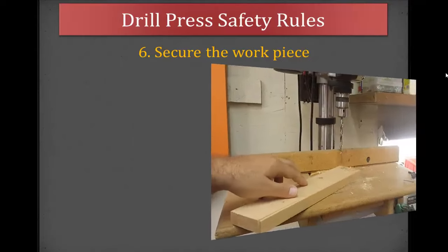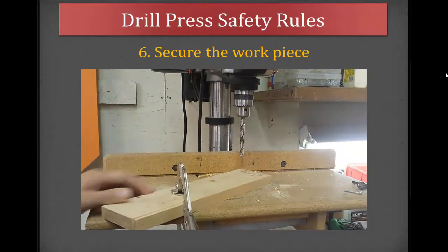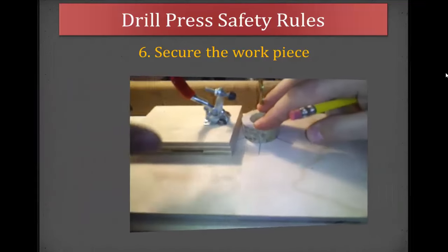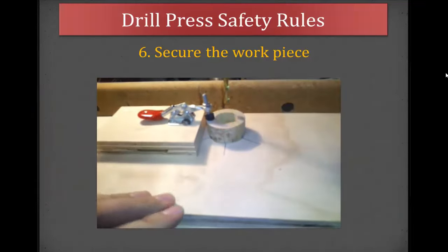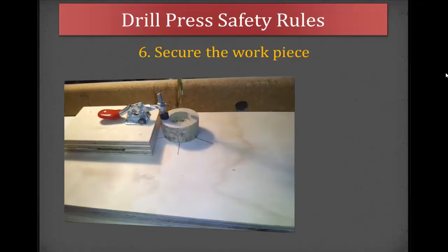Secure the workpiece. It's very important that you clamp down the workpiece or have it in a jig or a fixture. This will ensure that the workpiece stays stable and doesn't get loose and possibly spin around. If this does happen always remember to turn the machine off. Do not reach in and try to grab the piece. This can result in a bad injury.